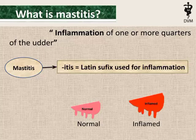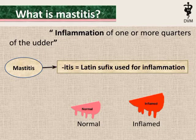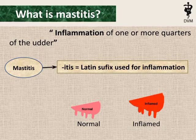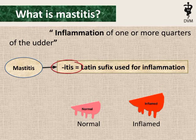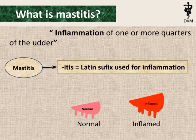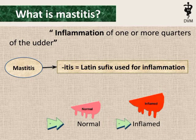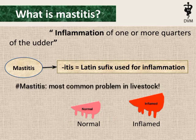What is Mastitis? Let's discuss. It is inflammation of one or more quarters of the udder. The suffix '-itis' is a Latin term used for inflammation. The normal and inflamed udder are shown in the slide.